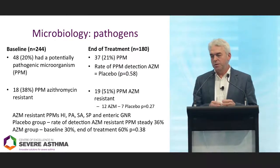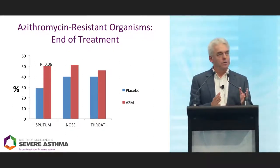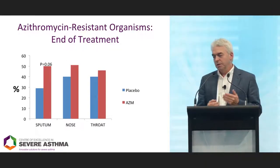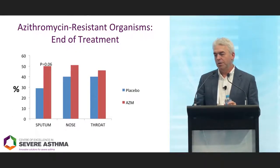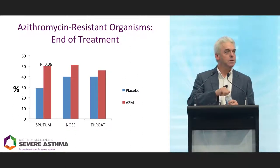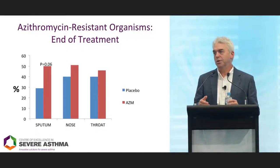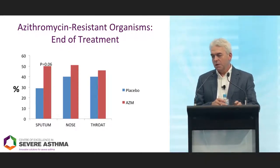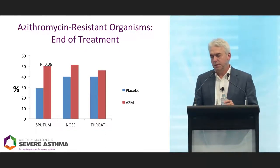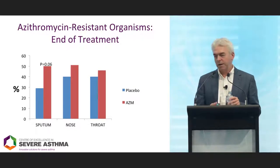We also did surveillance cultures looking at non-pathogens — examining non-pathogens in sputum, nose and throat for azithromycin resistance. This increased with azithromycin, particularly in the sputum. This is an area where we need to continue observing the importance and significance of these results. The summary is that in asthma and COPD, a year of azithromycin is effective with some manageable side effects.